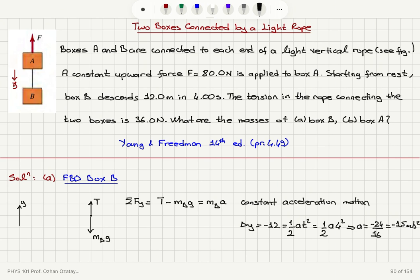The tension is, according to the free body diagram of box B, mass of B times g plus a. So, mass of block B must be equal to the tension T divided by acceleration a plus gravitational acceleration g.